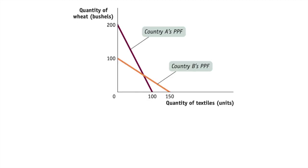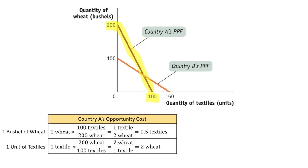Let's start with country A. Our graph shows that country A can produce either 200 bushels of wheat or 100 units of textiles, or in between those two amounts. You can calculate the opportunity cost to produce one bushel of wheat by finding the slope of its curve. We divide 100 units of textiles by 200 bushels of wheat, which equals 0.5 textiles.